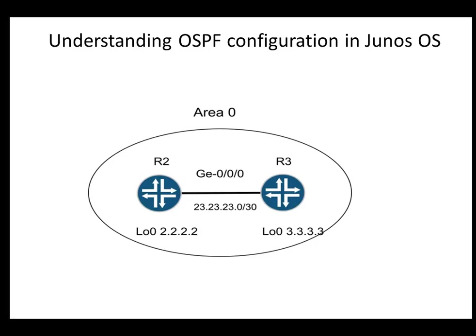Welcome to Network Route. Today we're going to configure OSPF in Junos. In this topology we have R2 and R3 directly connected over interface GigabitEthernet 0/0/0. We are going to configure both connected interfaces into Area 0, the backbone area. The prefix for the directly connected interfaces is 23.23.23.0/30.